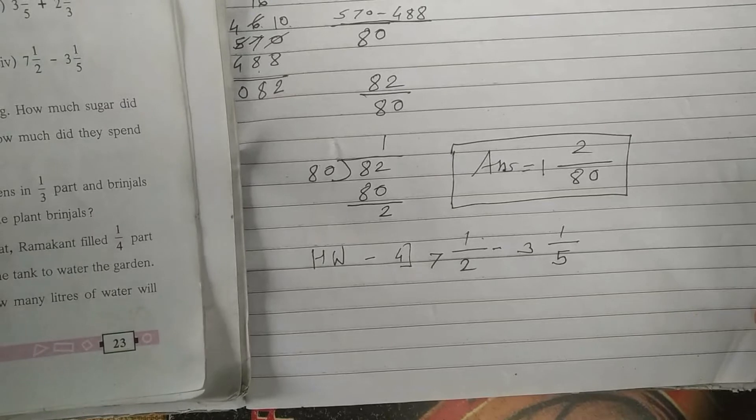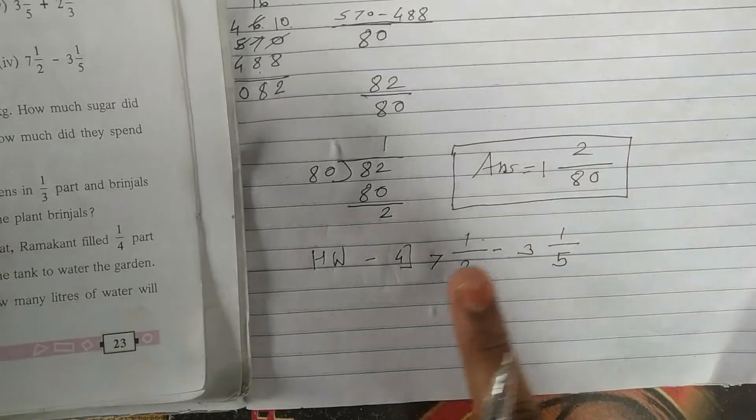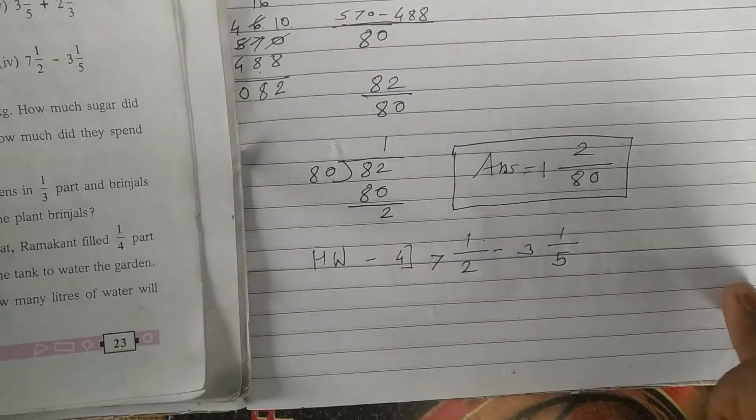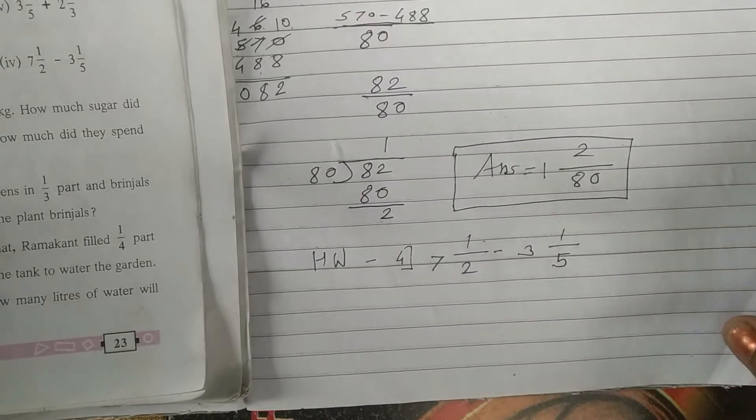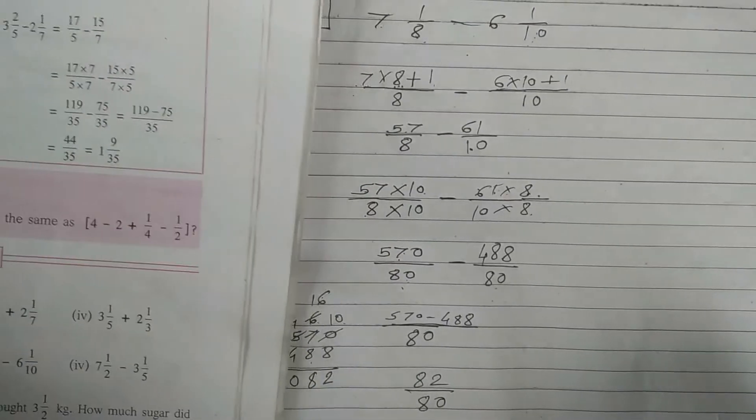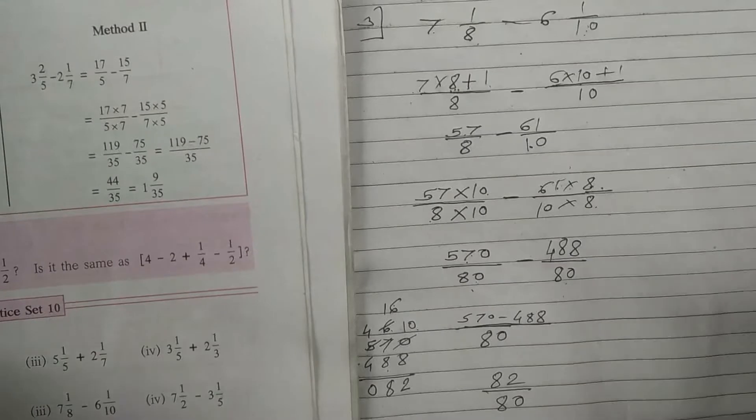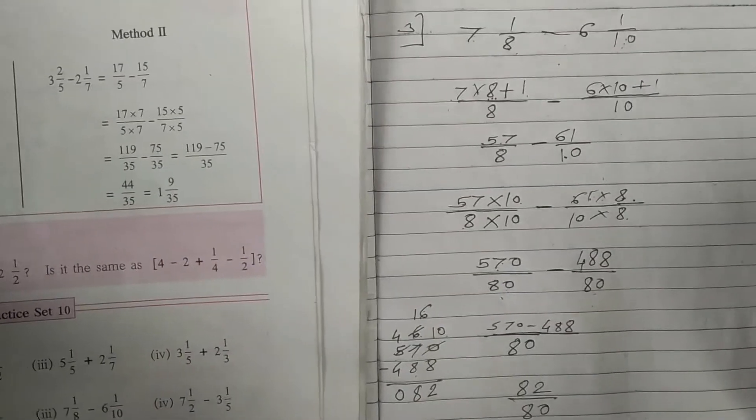Otherwise you may download from Diksha app. Complete this homework 7 and 1 upon 2 minus 3 and 1 upon 5. Any method you can use students. Again I say cross multiplication is the best method always.